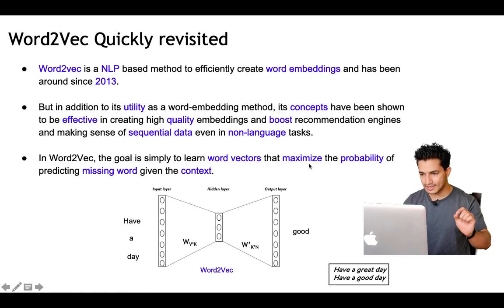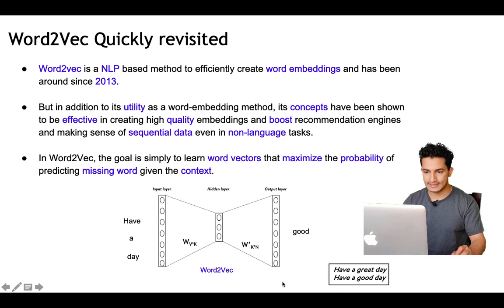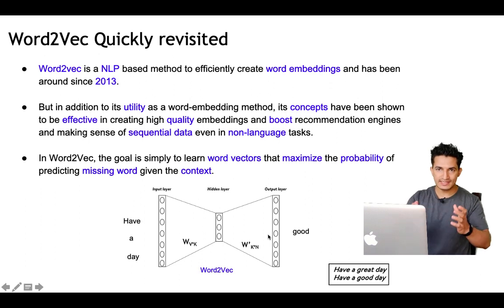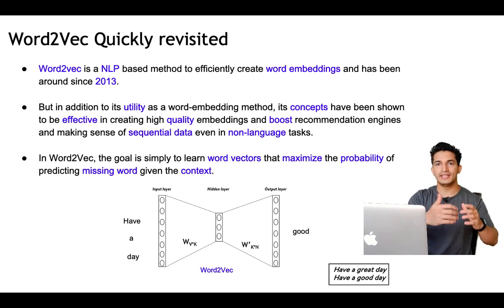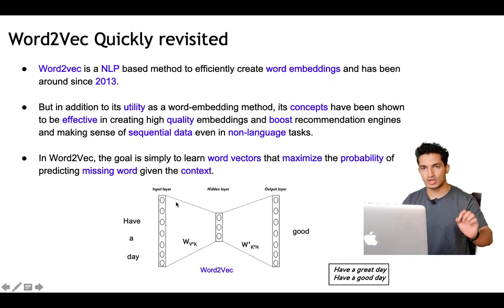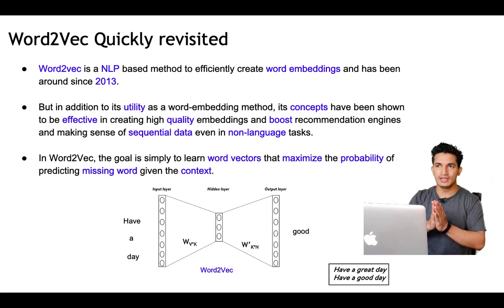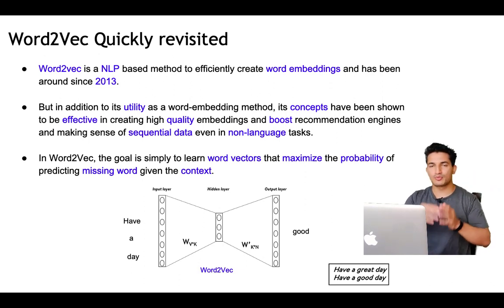Word2Vec works by learning word vectors that maximize the probability of predicting a missing word given its context. For example, given 'have a ___ day', the model should generate embeddings good enough to predict the missing word. As the model becomes more accurate, the embeddings get trained to high quality and represent the actual meaning of words. Once trained on a huge number of sentences, we find that 'great' and 'good' are similar because 'have a great day' and 'have a good day' are used in similar contexts, so their embeddings will be close in vector space.